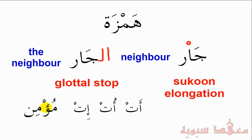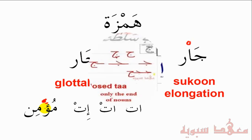Now let's assume there was actually a Fathah rather than a Sukun. So let's take the Sukun off and put a Fathah. How would we pronounce this? It would be 'Mu'min.' In the next lessons insha'Allah, we'll explain the two types of Hamzas. Was-salamu alaykum wa rahmatullahi wa barakatuh.